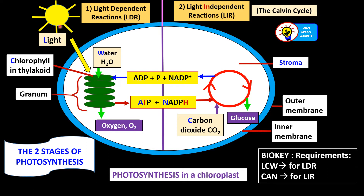LCW — the initials of a famous athlete — helps us remember the requirements: L for light, C for chlorophyll, W for water. Light shines on the chlorophyll; chlorophyll absorbs the light energy and its electrons become excited. Through a process we'll discuss, ATP is produced — meaning light energy is converted into chemical energy stored in ATP or adenosine triphosphate. Through the electrons, another molecule produces NADPH.